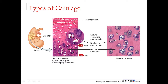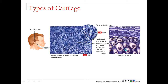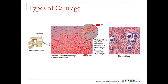The pink extracellular matrix surrounds the lacunae in cartilage. Elastic cartilage, found in the ear, shows elastic fibers and lacunae housing chondrocytes. Fibrocartilage contains dense collagen fibers running in different directions for strong support, with lacunae containing chondrocytes visible throughout.